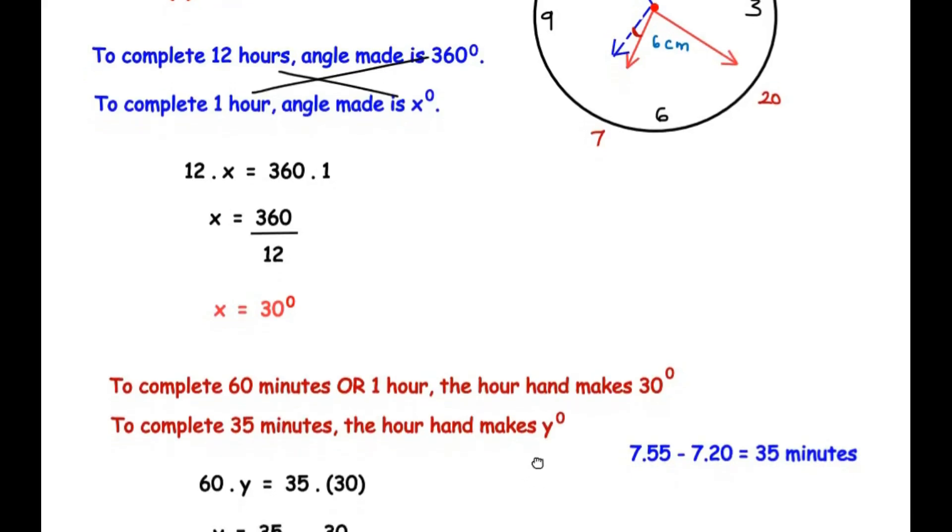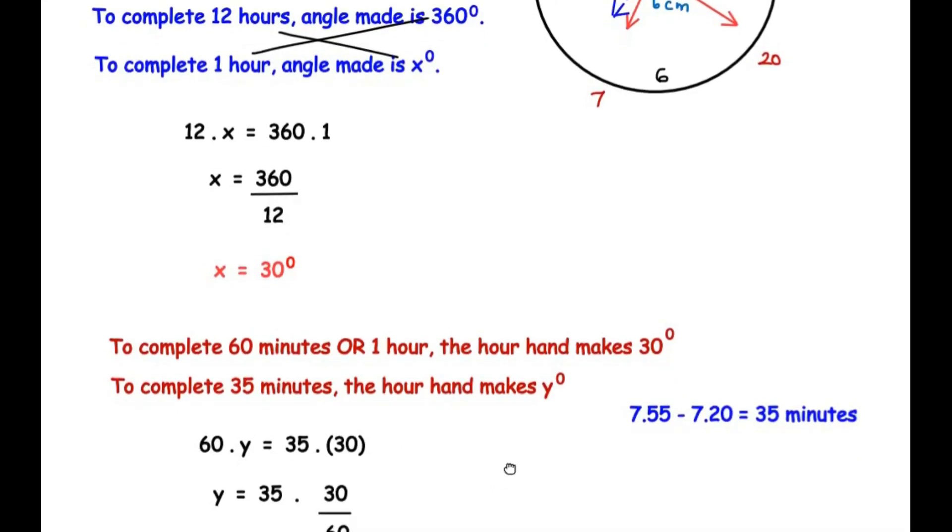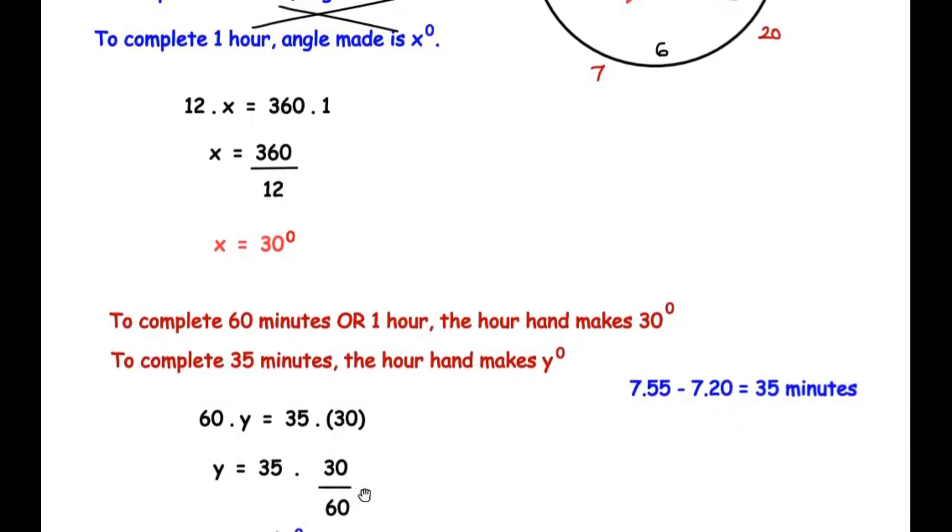Taking 60 on the other side of the equal sign, we get 35 times 30 over 60. Now 30 and 60, going by the table of 30, that is 30 times 1 is 30 and 30 times 2 is 60.